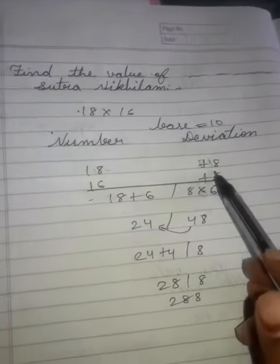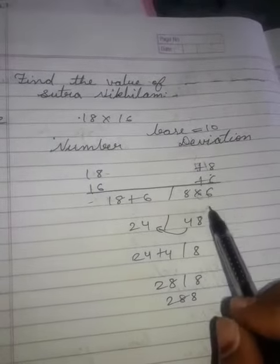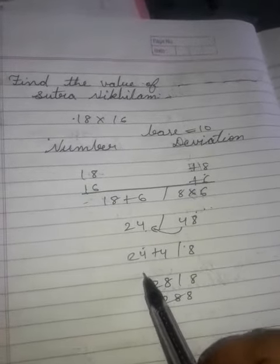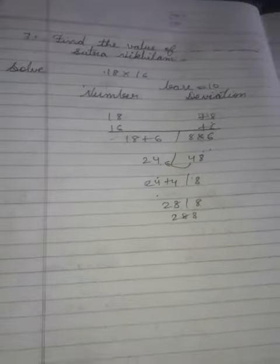Number deviations: 18 plus 8, 16 plus 6. Then 18 plus 6 and 18 multiply 6. 18 plus 6 is 24. 8 multiply 6 is 48. Adding 4 to 24 gives 28, and 8 stays 8, so the answer is 288.